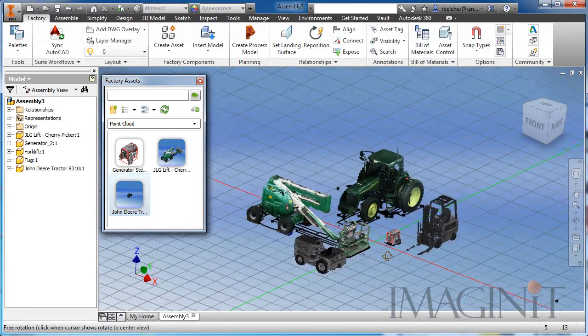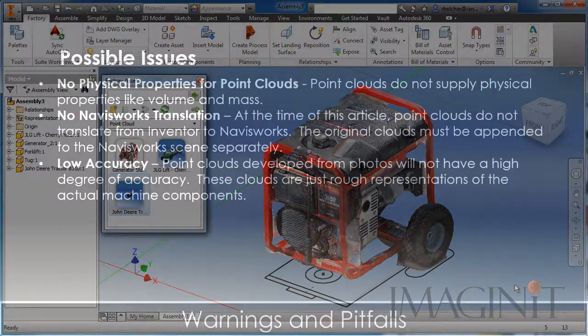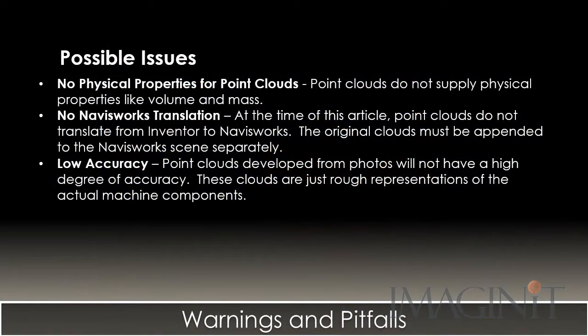It is important to note that this method is not perfect and there are a couple of pitfalls to be aware of. There are no physical properties for point clouds — they do not supply physical properties like volume and mass. There is also an issue with Navisworks translation: at the time of this article, point clouds do not translate directly from Inventor to Navisworks; the original clouds must be appended to the Navisworks scene separately. And finally, low accuracy — point clouds developed from photos will not have a high degree of dimensional accuracy; these clouds are just rough representations of the actual machine components.